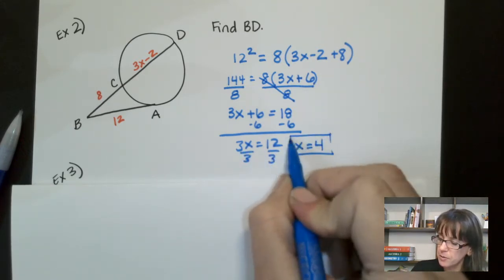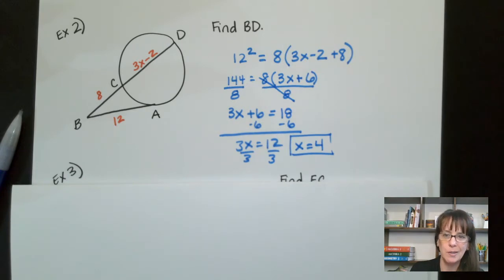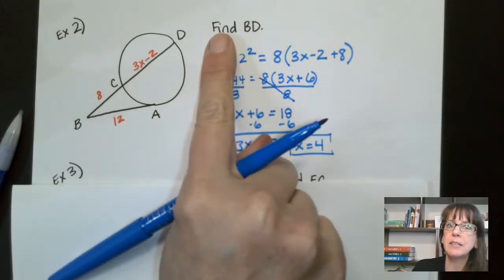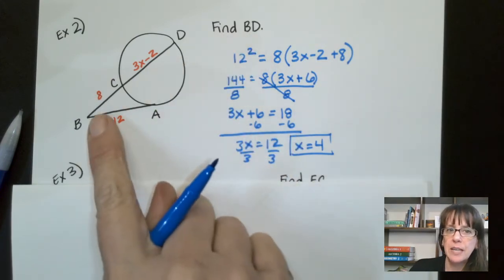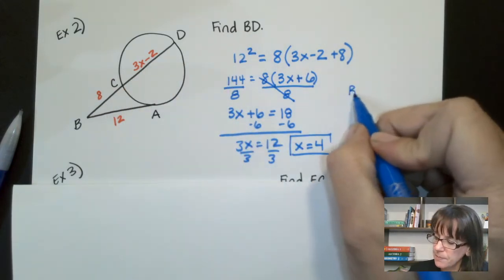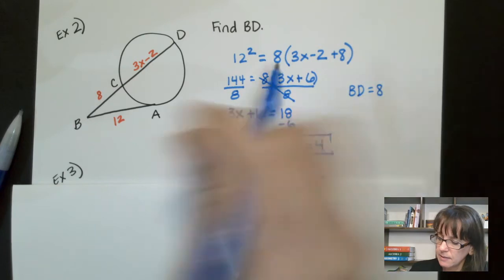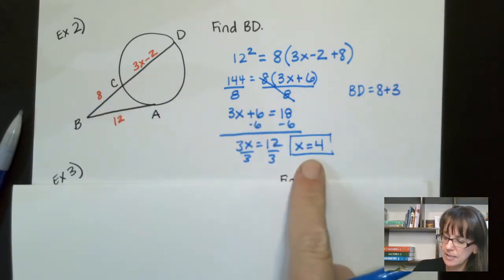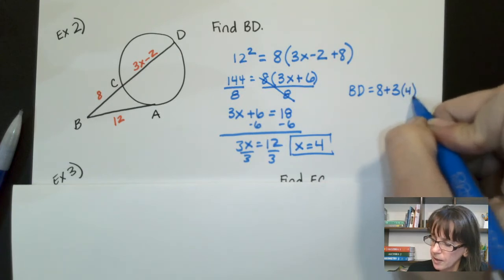First rule of geometry is always reread the question because is our, have we answered the question? We have not. We said X equals 4, but it tells us to find the length of BD. So the length of BD is going to be 8 plus 3X. And we already know X is 4. So 3 times 4 minus 2.